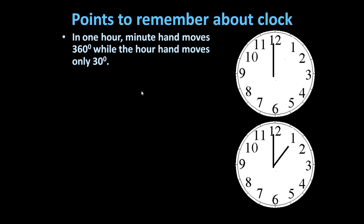In one hour, this minute hand will move from this point to this point, making an angle of 360 degrees, while the hour hand will move from this to this, making an angle of 30 degrees. This is the first point which we should always keep in mind while solving any problem based on clocks.